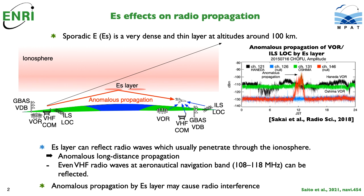The ES layer density is so high that VHF radio waves can be reflected and propagated over the horizon, which is called anomalous propagation. Radio waves, even in the aeronautical navigation band from 108 to 118 MHz, can be reflected. This can potentially cause radio interference, and that is the reason why monitoring and predicting the ES layer occurrence is practically needed.